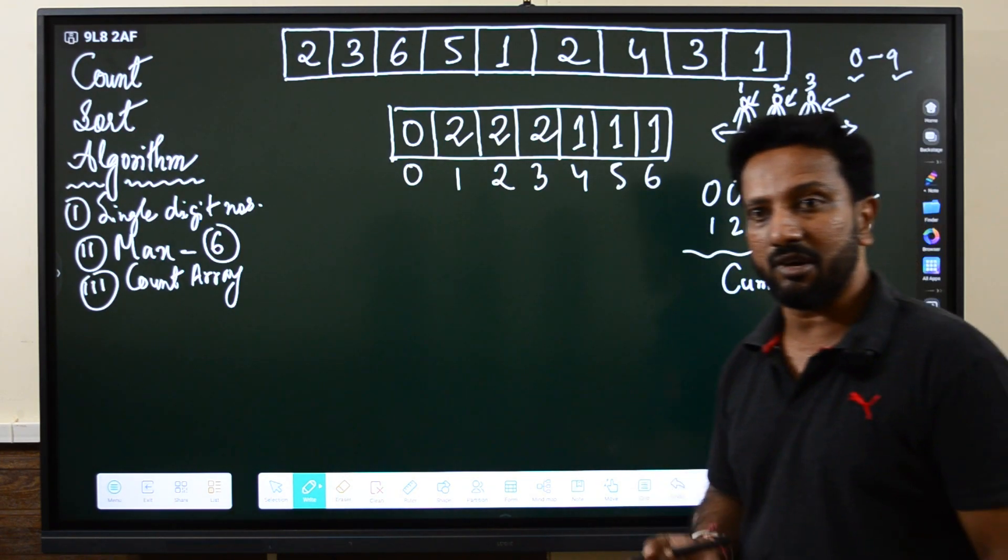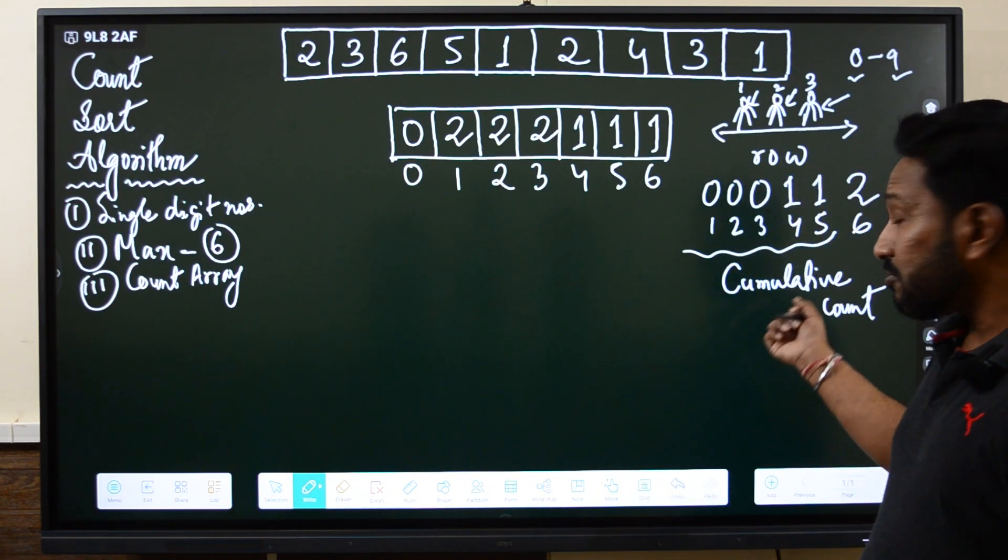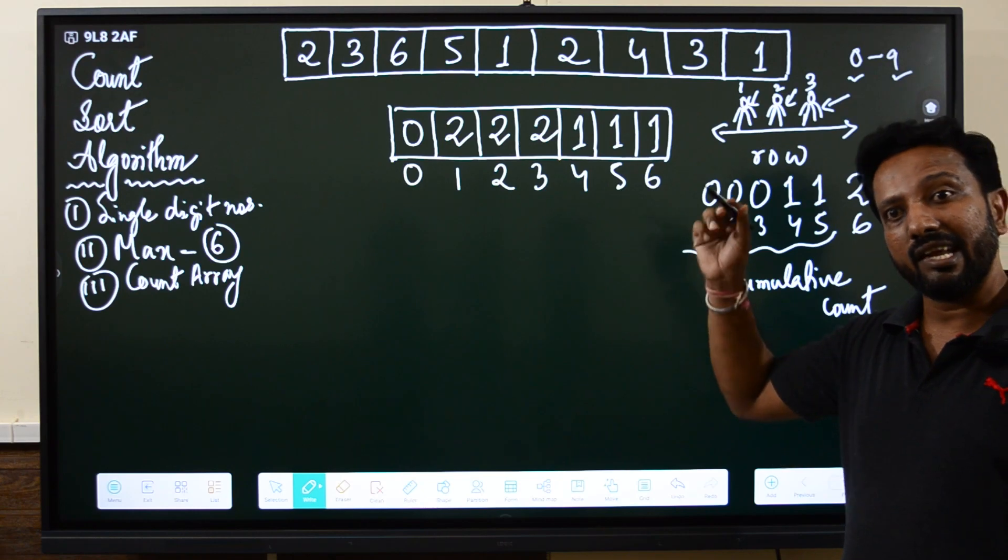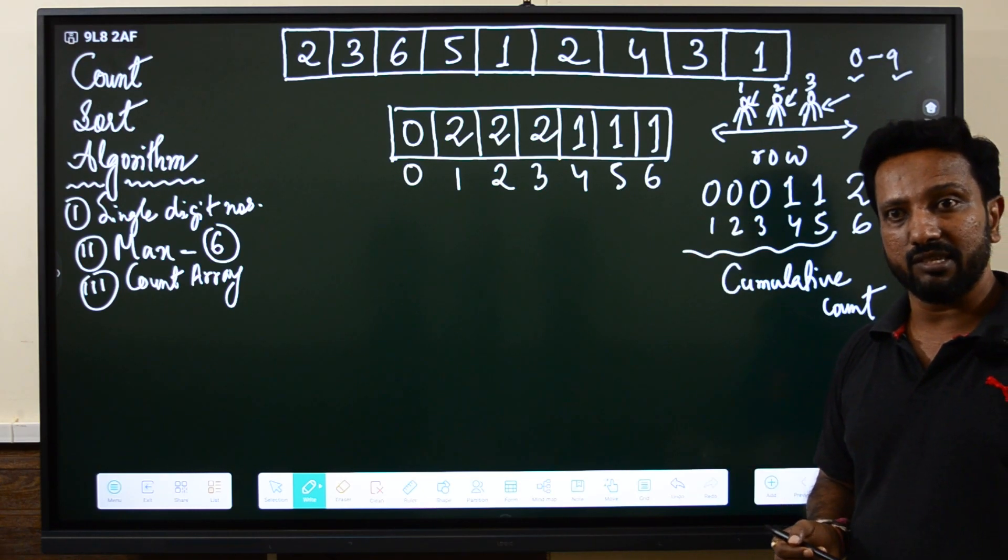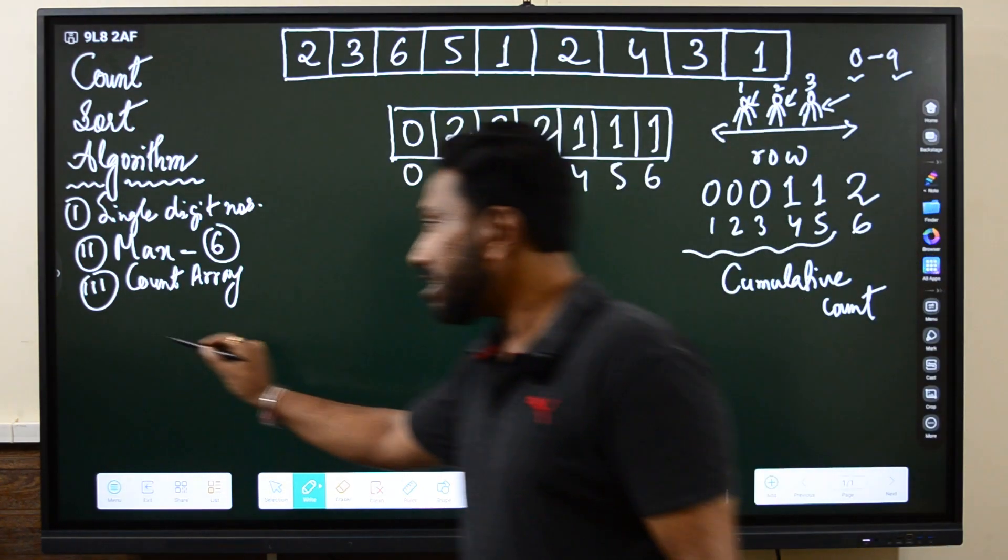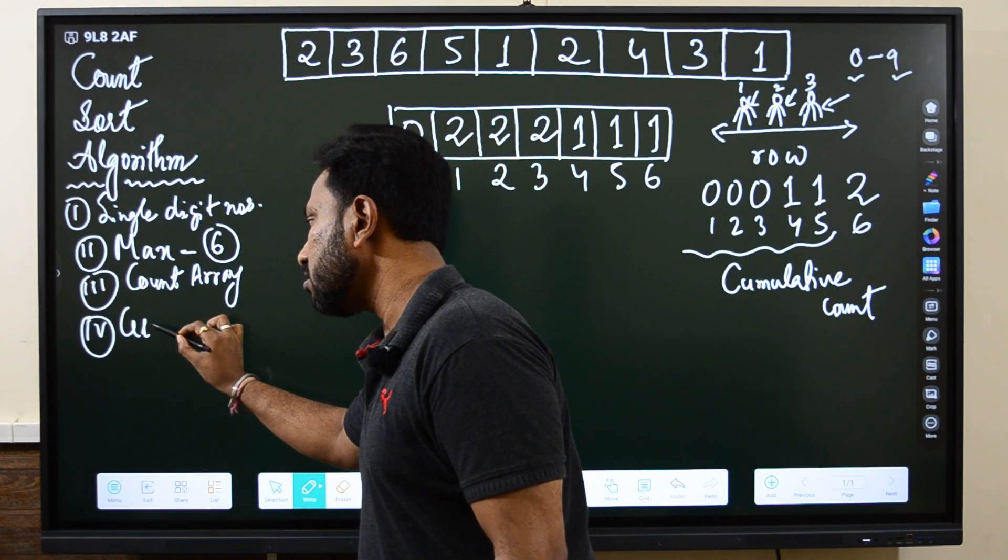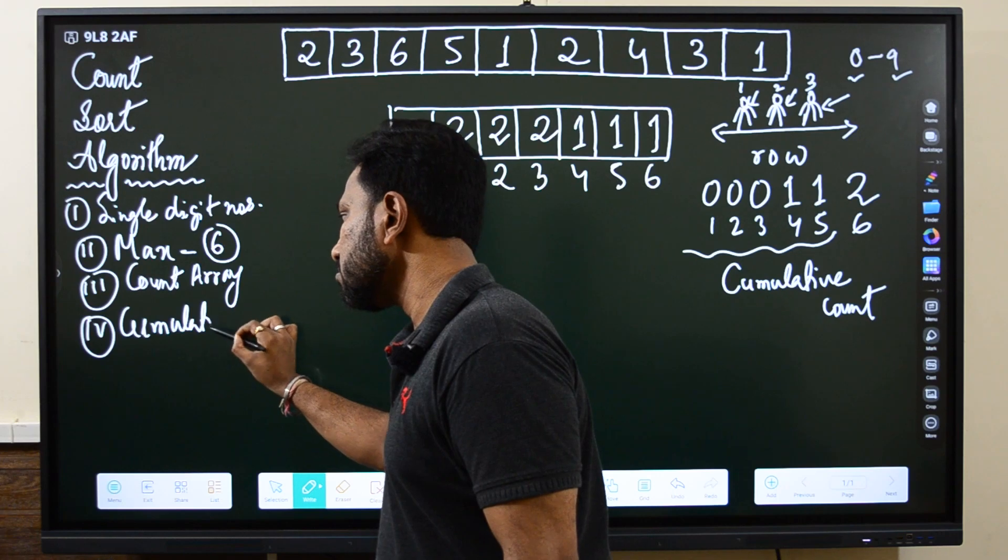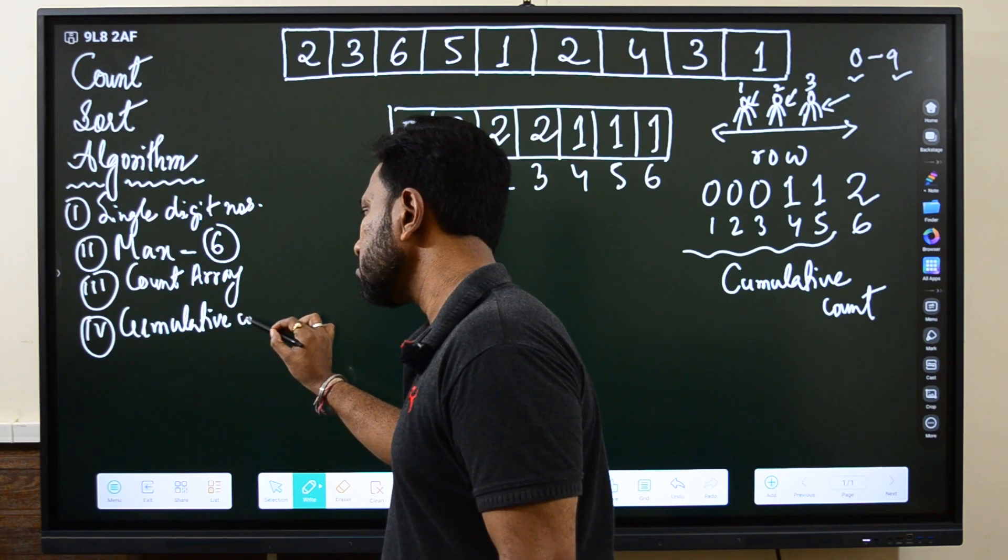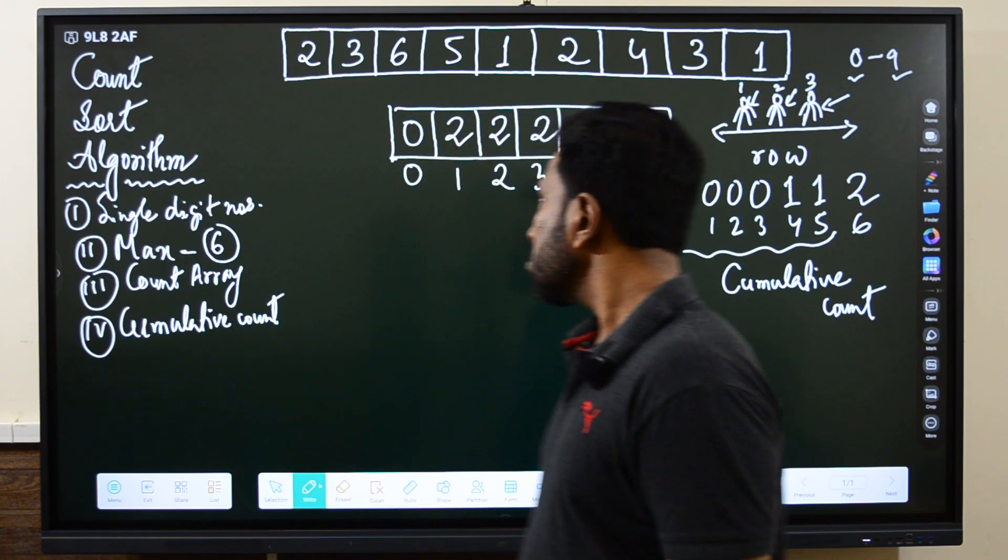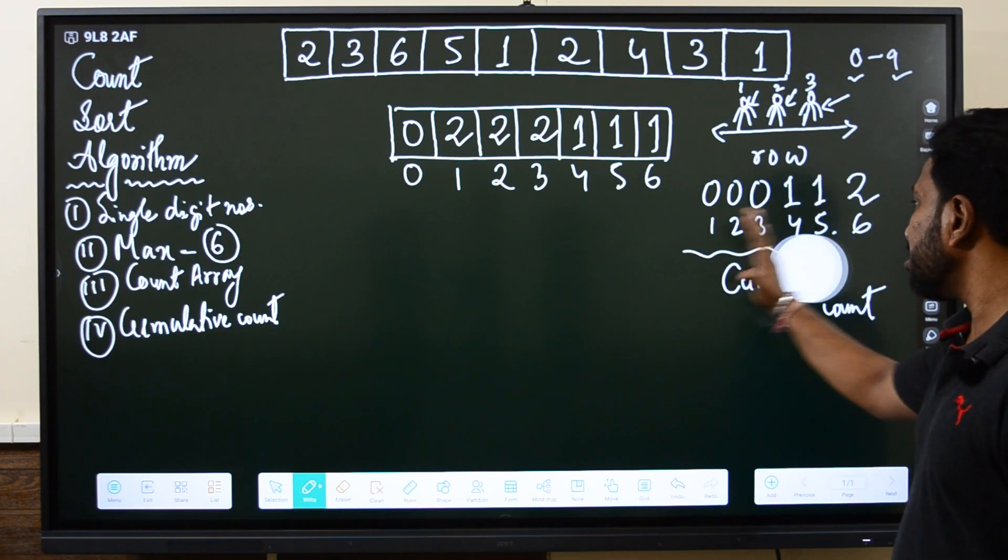Because the current position is always dependent on the previous positions, that's why we have to calculate the cumulative count. Just like the cumulative frequency in statistics, we will be calculating the cumulative count.